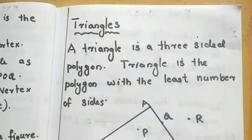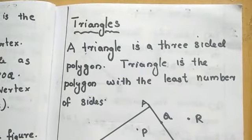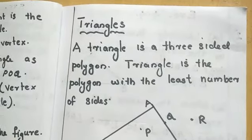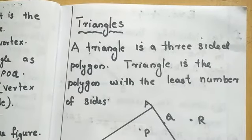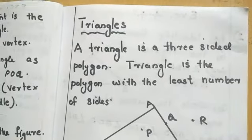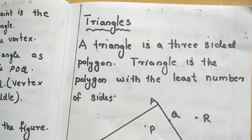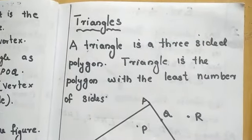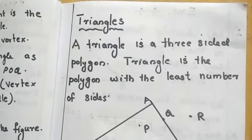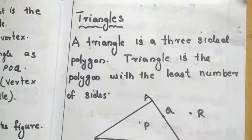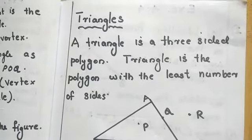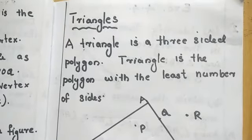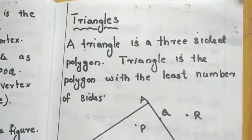Our today's topic is triangles and quadrilaterals. A triangle is a three-sided polygon — 'tri' means three. Triangle is the polygon with the least number of sides, because we cannot design a polygon with two sides; with two sides it will not be closed. So triangle is the polygon with the least number of sides.